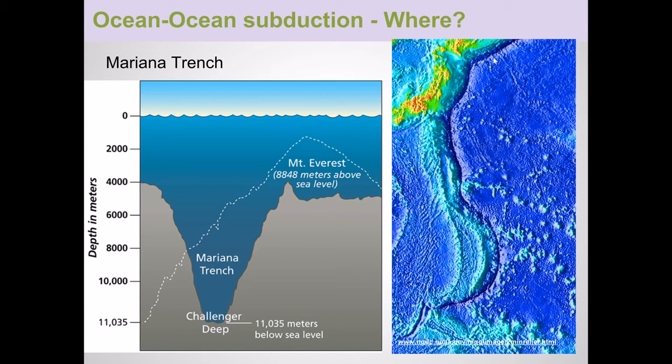This is caused by a convergent boundary, ocean-ocean convergence. You can see the arc shaped volcanoes being created behind that boundary. There's a bathymetric ocean floor depth map. There's that trench. There's your volcanic arc.